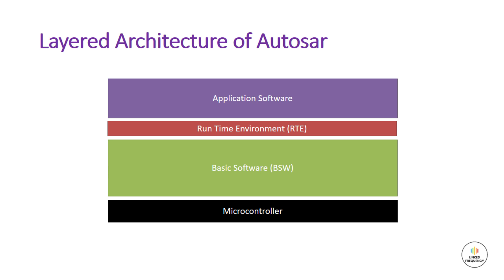Let us look into each of them in detail. The first one is the application layer — it is the topmost layer in the AutoSAR architecture. It includes various application-specific software components designed to execute a specific set of tasks as per the use case. It provides application software that implements specific functions such as powertrain control, chassis control, and infotainment.